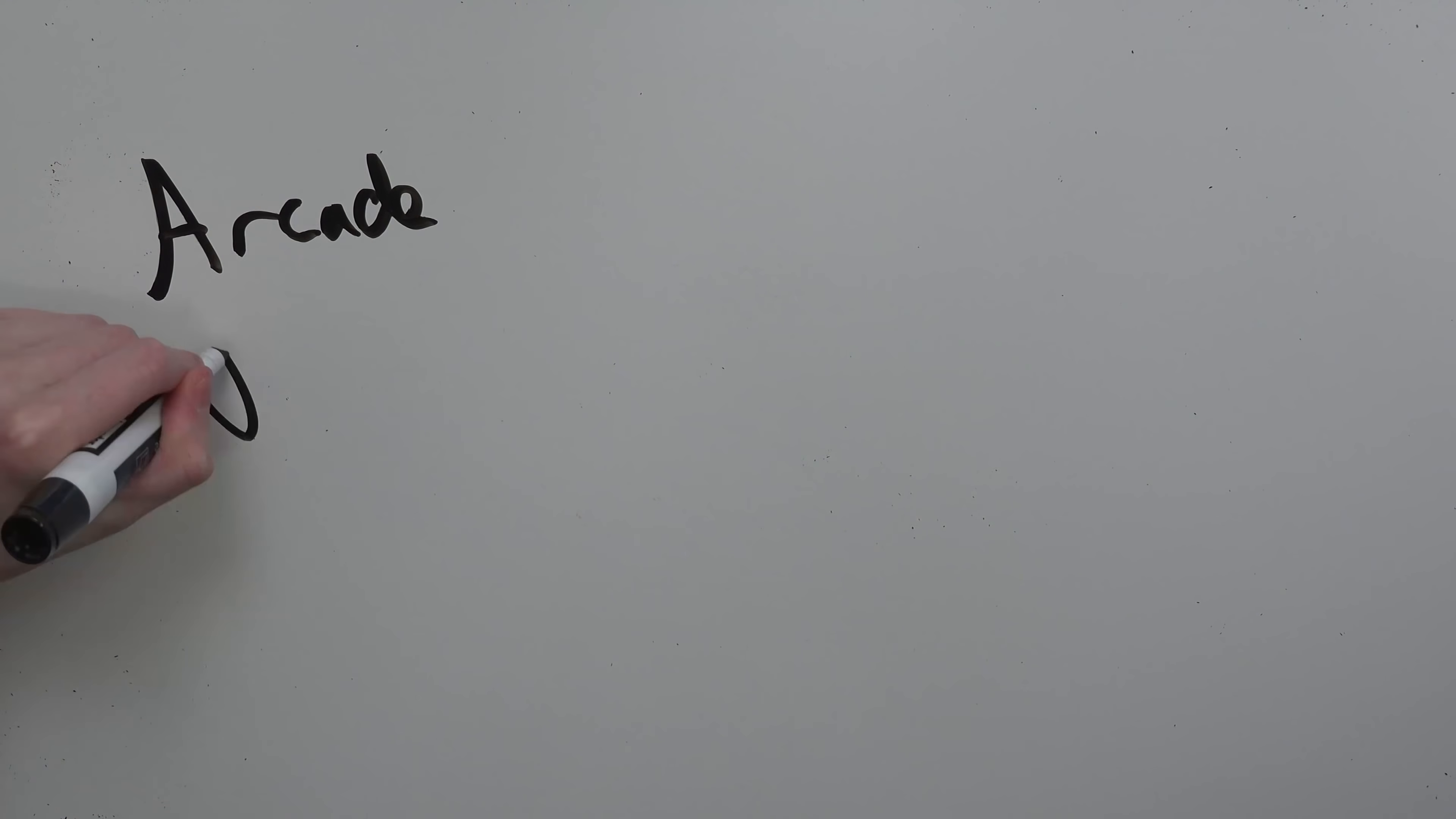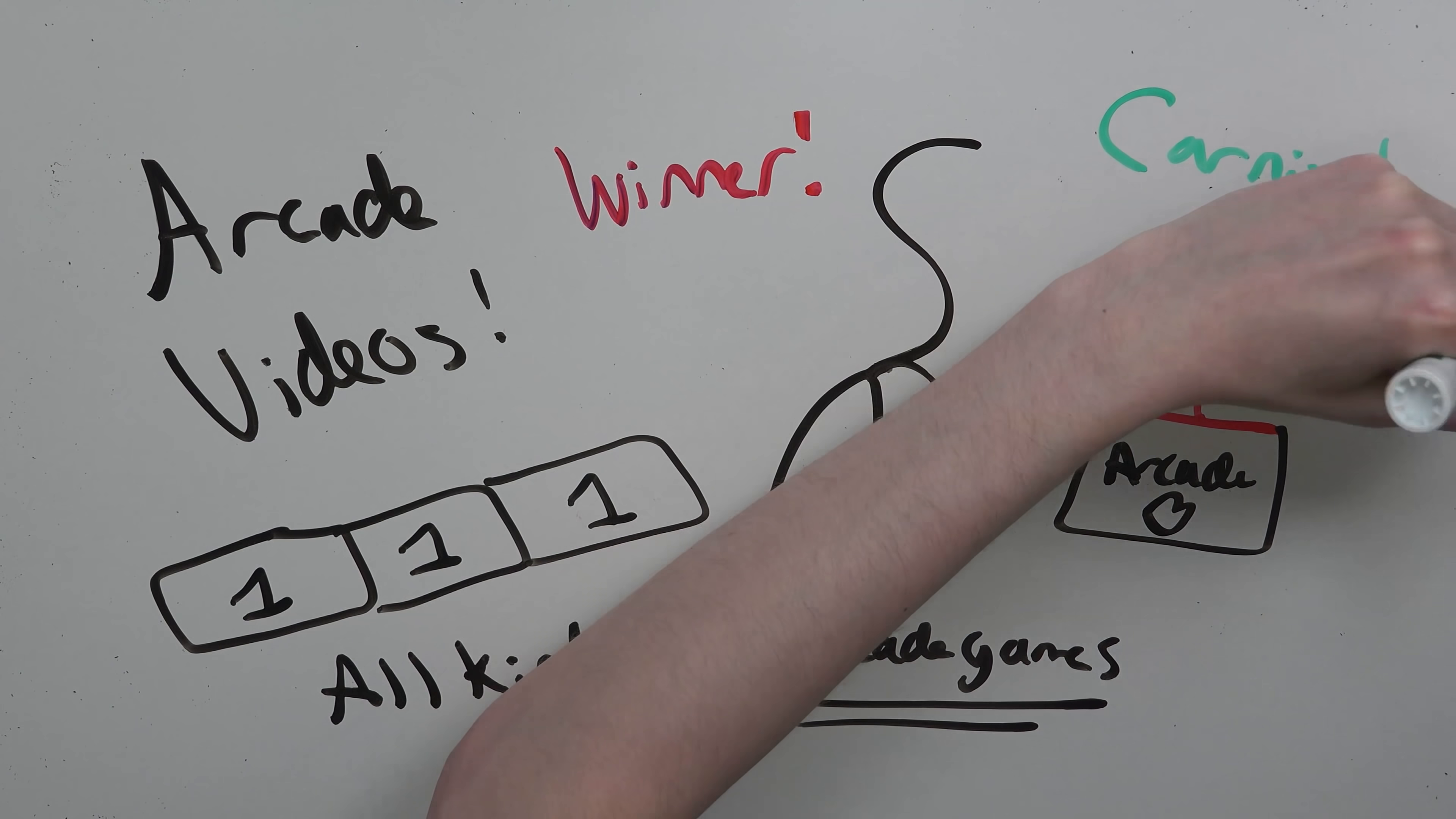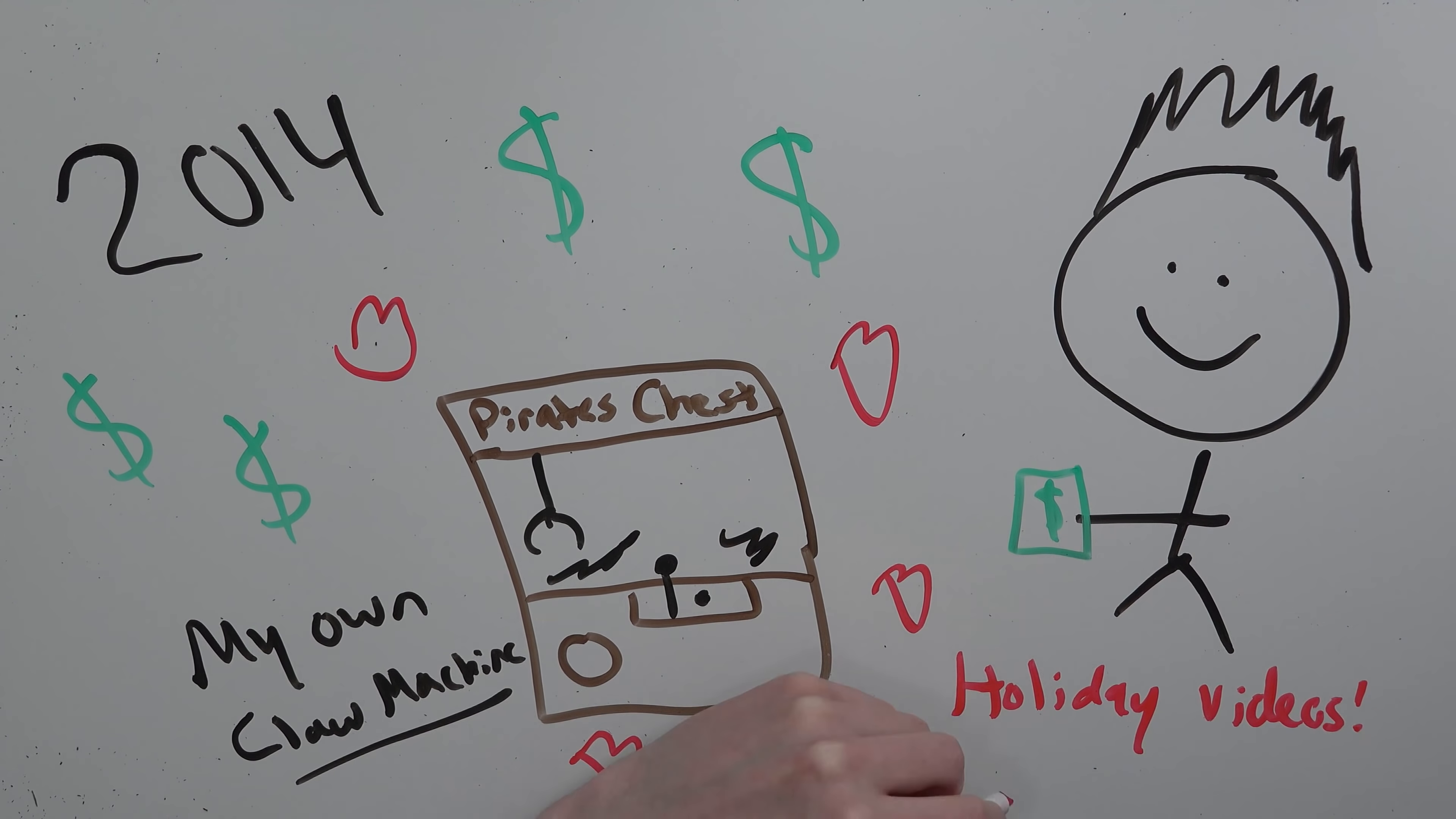When I first started my YouTube channel, there wasn't too many channels out there doing arcade stuff. They were mainly focused on claw machines. I liked all kinds of arcade games and my videos were among the first that were focused on playing different kinds of arcade games and going to different arcades. I was also the first arcade YouTuber that made carnival game videos. In 2014, I saved up enough money and bought a brand new claw machine, which has been featured in many of my videos.